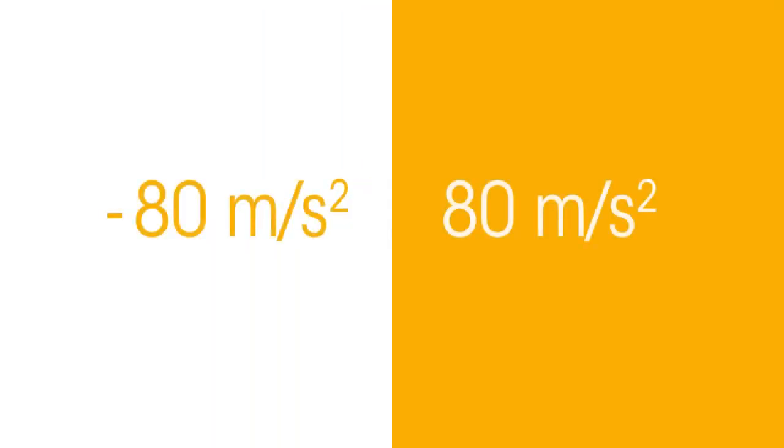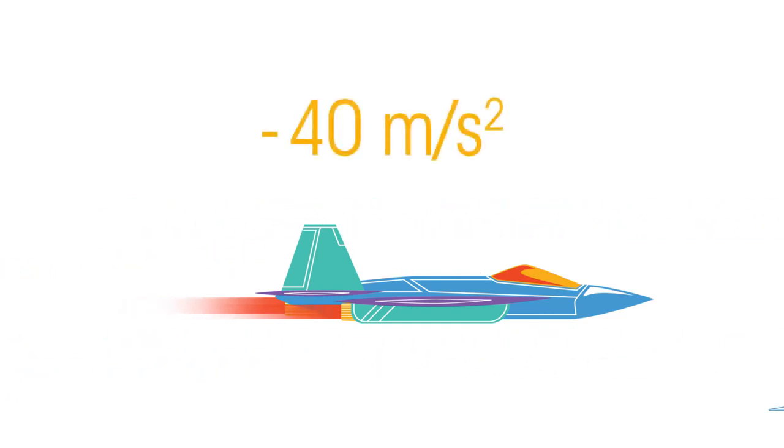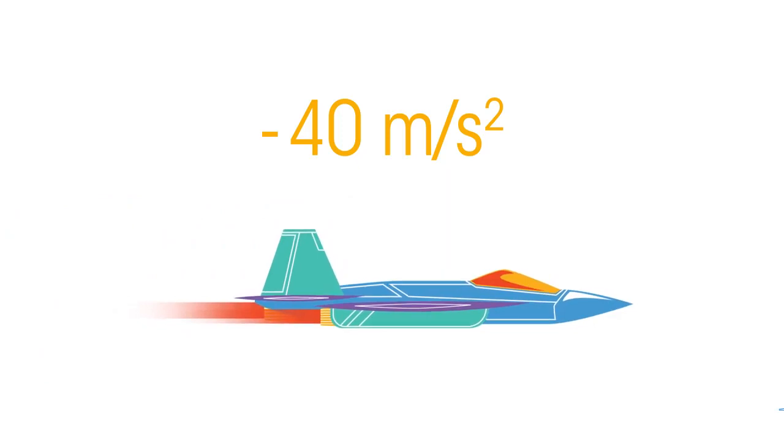The sign in front of an object's acceleration indicates whether the object's speed is increasing or decreasing. If an airplane's acceleration is negative 40 meters per second squared, its speed is decreasing.